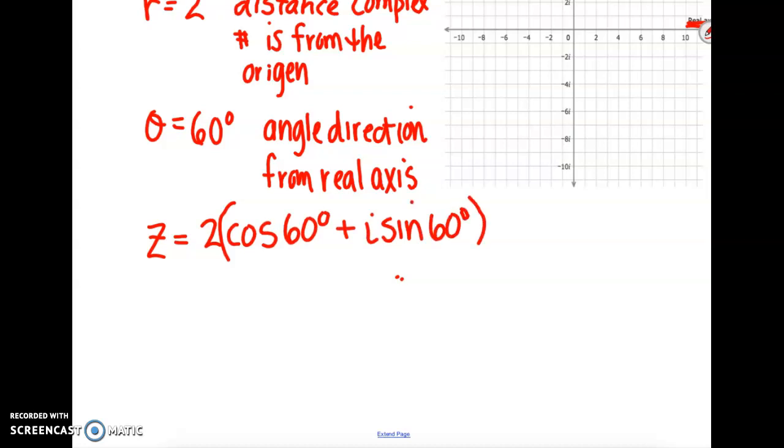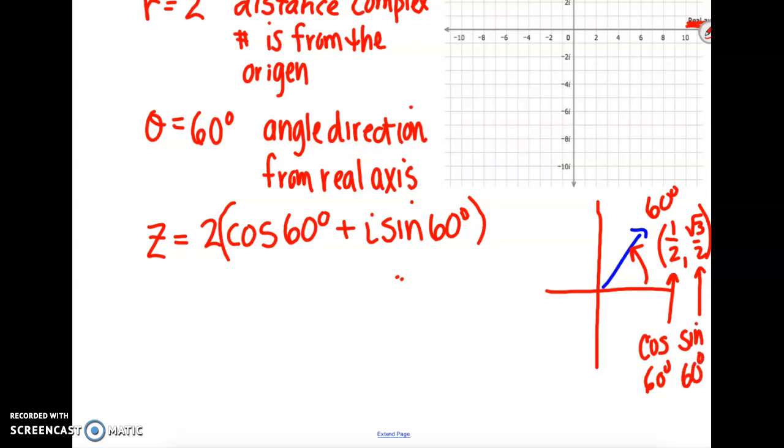Well, think about our unit circle back in unit 4. Here's 60 degrees and it has an ordered pair of 1 half comma square root of 3 over 2. This is your cosine value of 60 degrees and this is your sine value of 60 degrees.